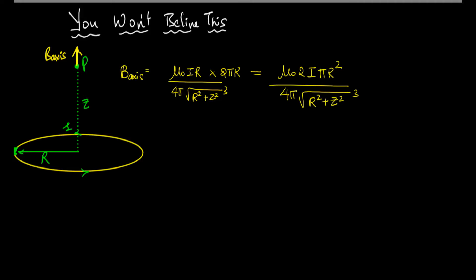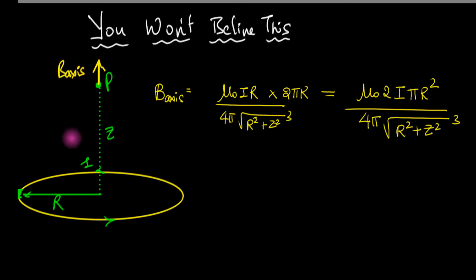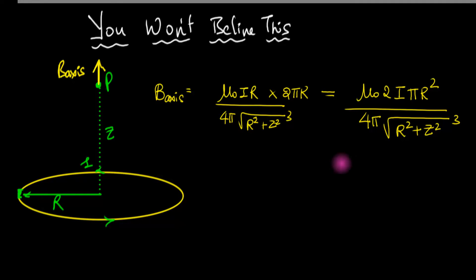Here is where I left you last time: I had a current-carrying loop and we calculated the magnetic field on the axis of that loop, and this nasty equation is what it turned out to be. It looks pretty ugly, but I'm going to leave it as it is for now and not fiddle with it.